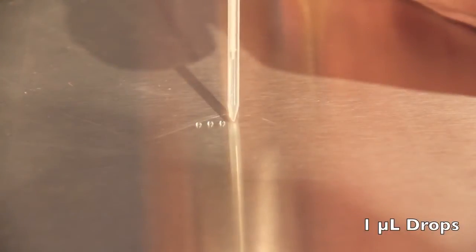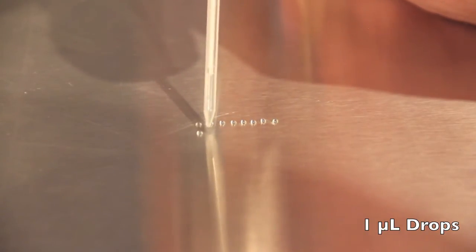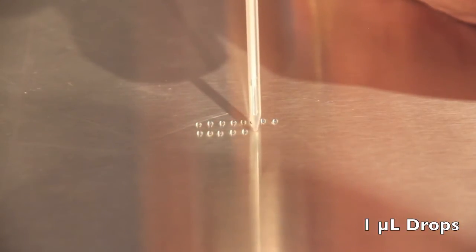With nine syringes to choose from, the Ritter Repet Gen X is able to dispense from one microliter up to 50 mils. In this shot, we are dispensing one microliter drops onto our countertop.